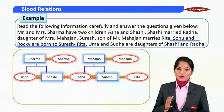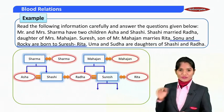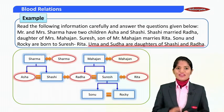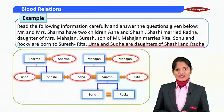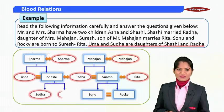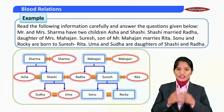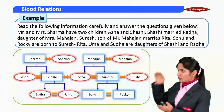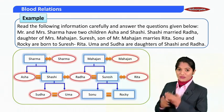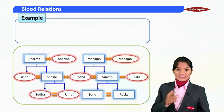Sonu and Rocky are born to Suresh and Rita — Suresh and Rita have two sons, one is Sonu and one is Rocky. Uma and Sudha are daughters of Shashi and Radha — so Shashi and Radha have two daughters, one is Sudha and one is Uma. From this lengthy passage we are able to draw a family tree, and using this family tree it becomes very simple to answer the questions.